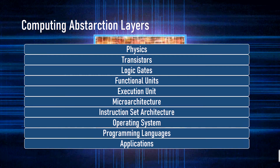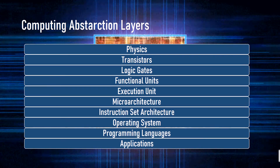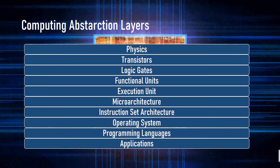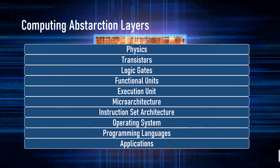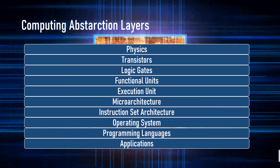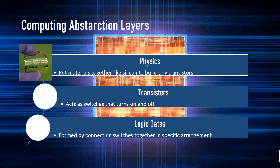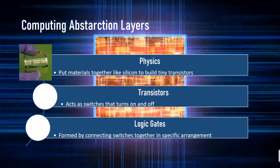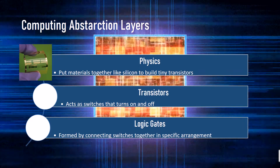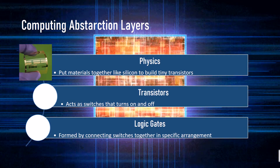Computing abstraction layers are the following: physics, transistors, logic gates, functional units, execution units, micro architecture, instruction set architecture, operating system, programming languages, and applications.